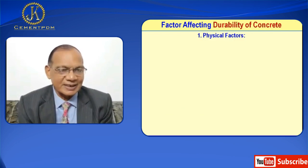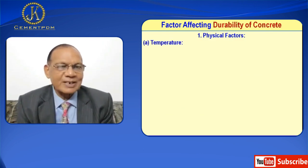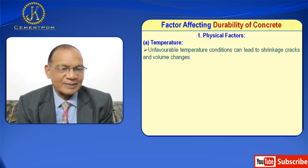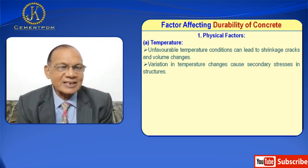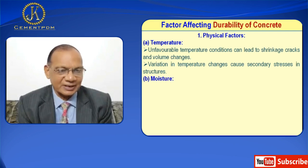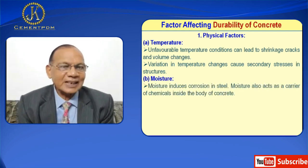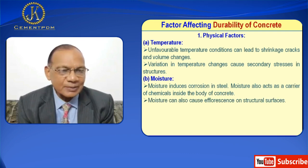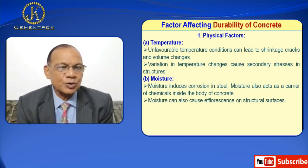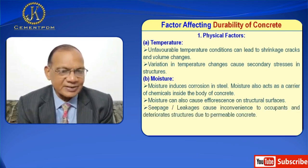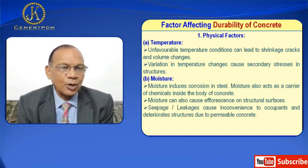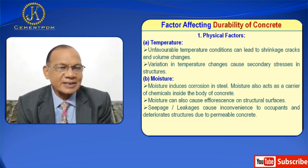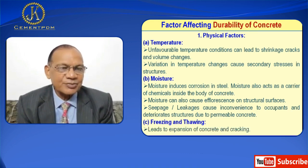Now I will discuss factors affecting durability. Number one is physical factors. First is temperature — unfavorable temperature conditions can lead to shrinkage cracks and volume changes. Variation in temperature causes secondary stresses in structures. Second is moisture — moisture induces corrosion in steel and also acts as a carrier of chemicals inside the body of concrete. Moisture can also cause efflorescence on structural surfaces. Seepage and leakages cause inconvenience to occupants and deterioration of structures due to permeable concrete. Third is freezing and thawing — leads to expansion of concrete and cracking.